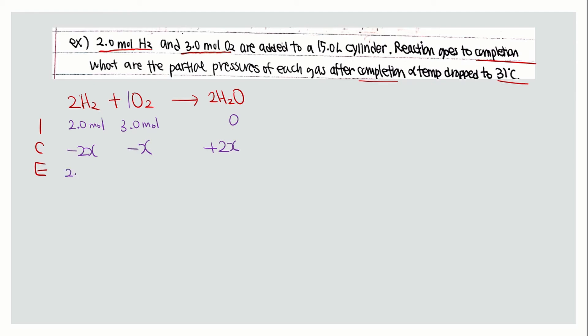At equilibrium, the value for hydrogen will be 2 minus 2x. For oxygen it will be 3 minus x, and water will be 2x.